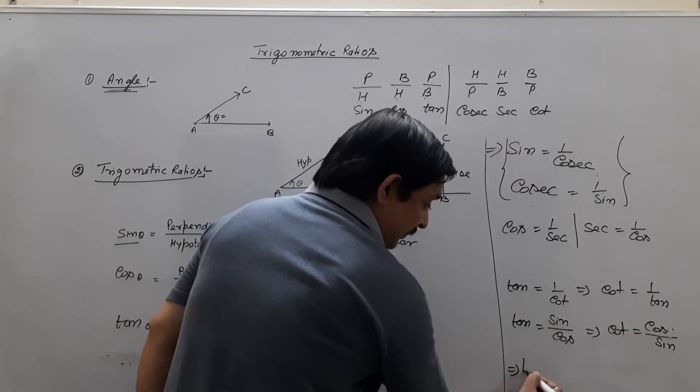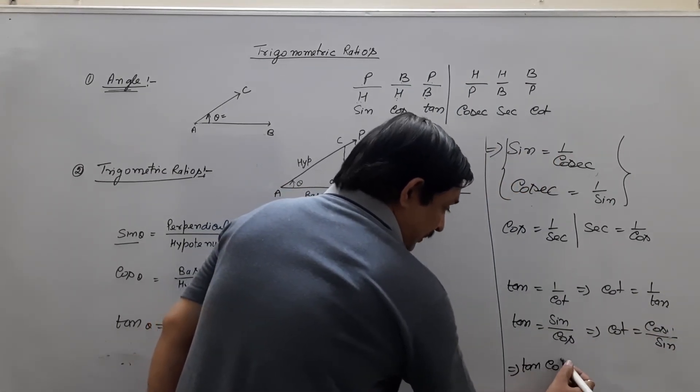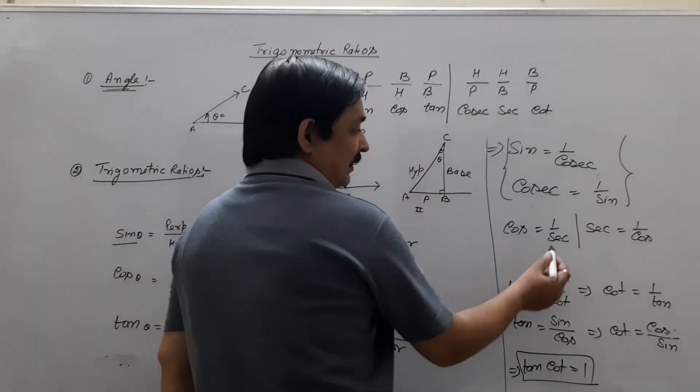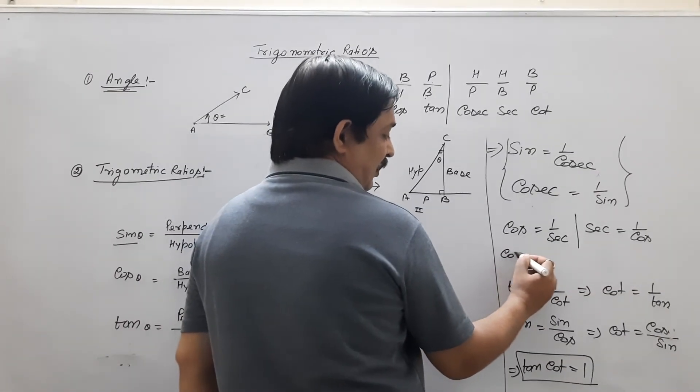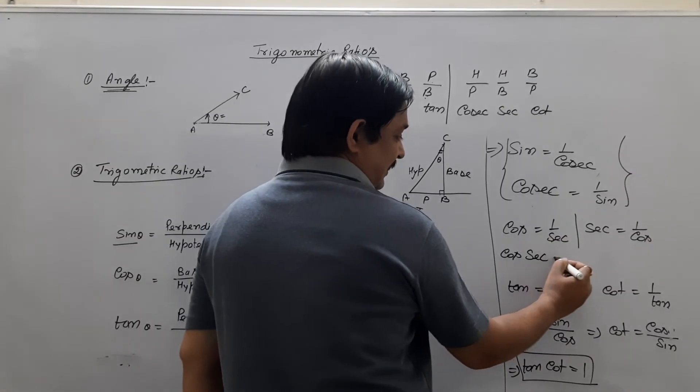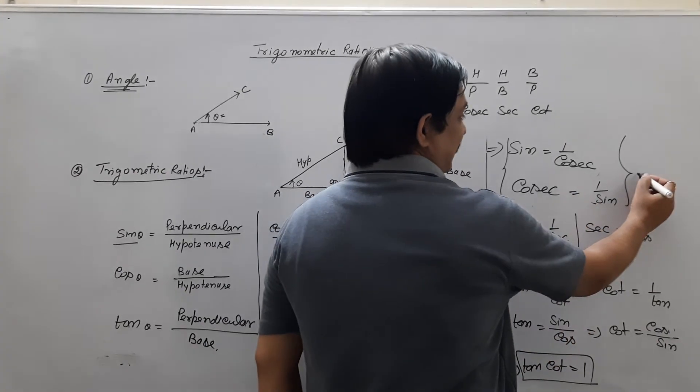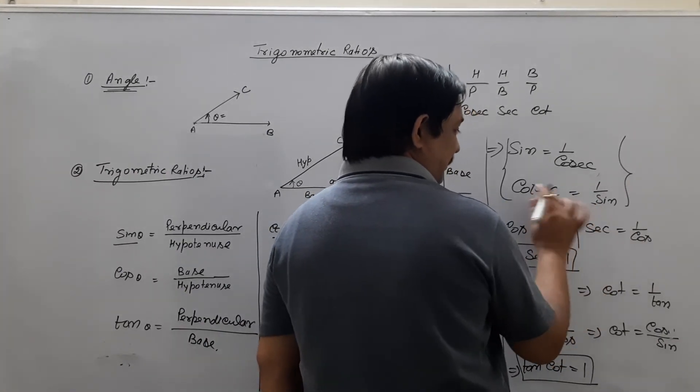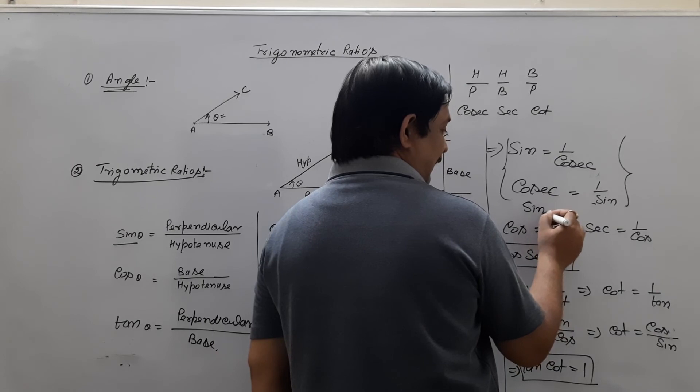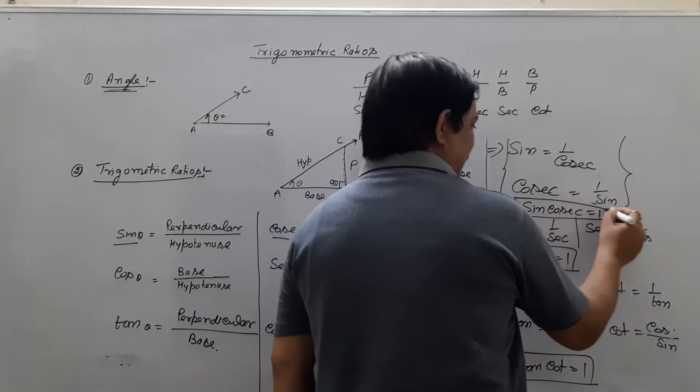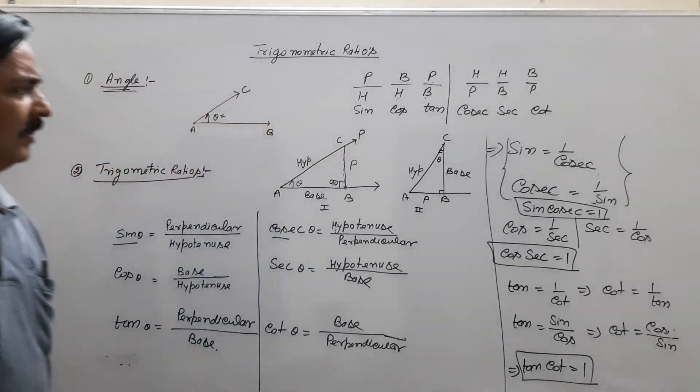Tan into cot, so this will cancel and then one. Now when you multiply it, cos and sec you have one. In both the multiply, sin multiplied cos is equal to one. What is the problem?